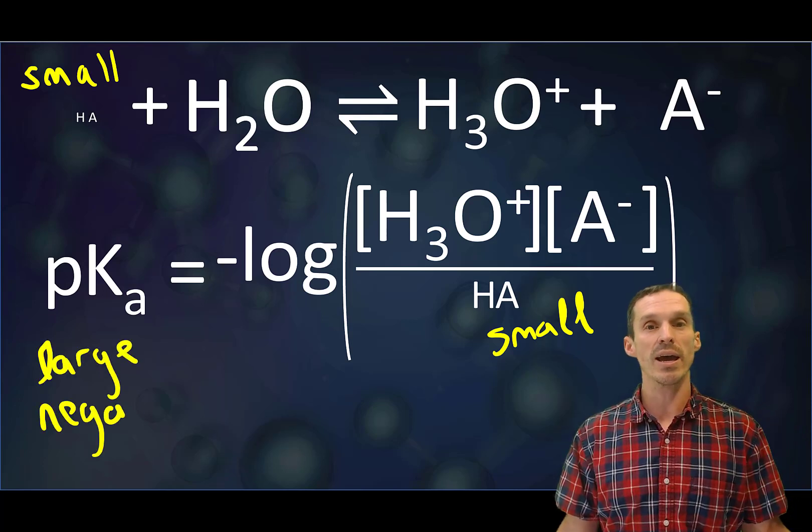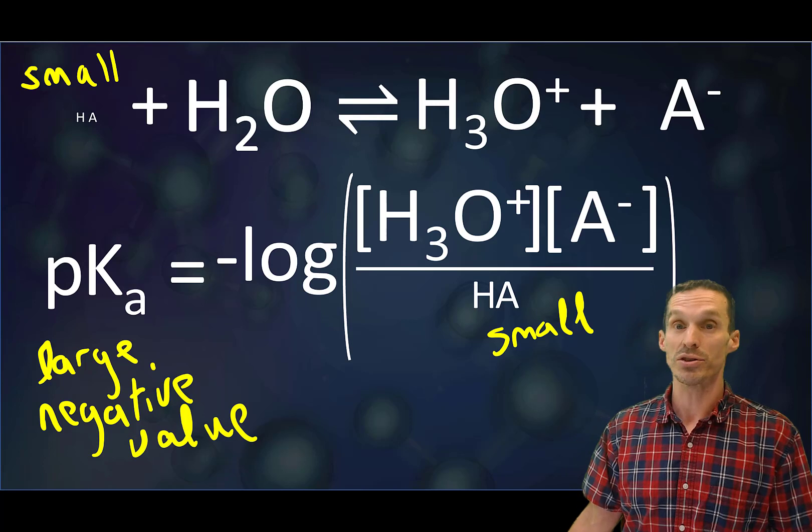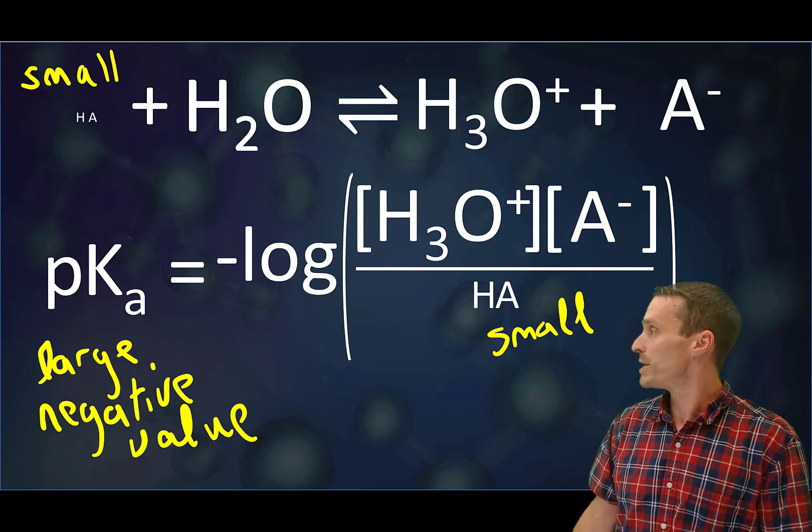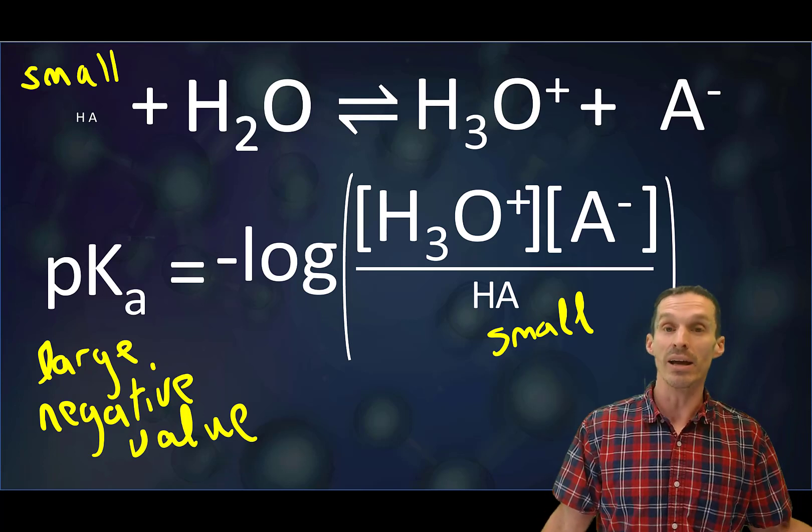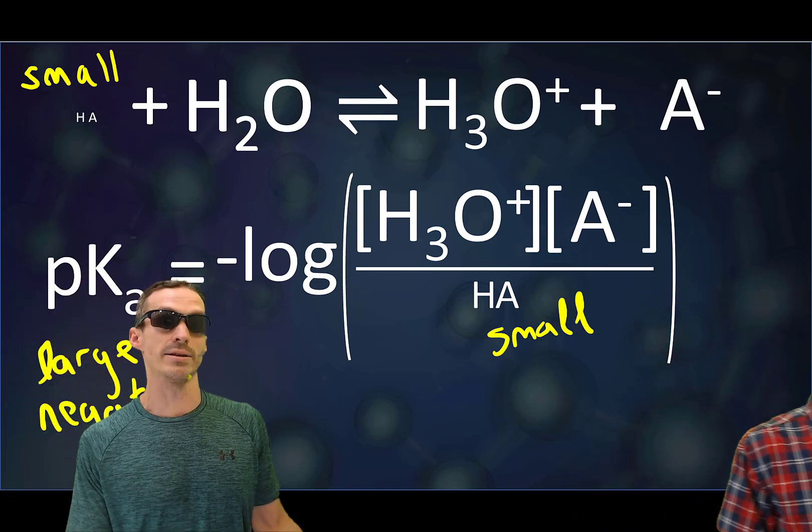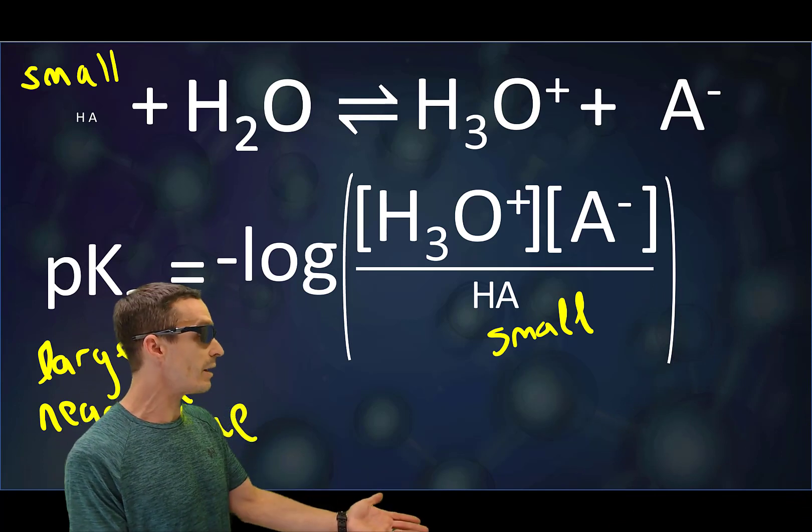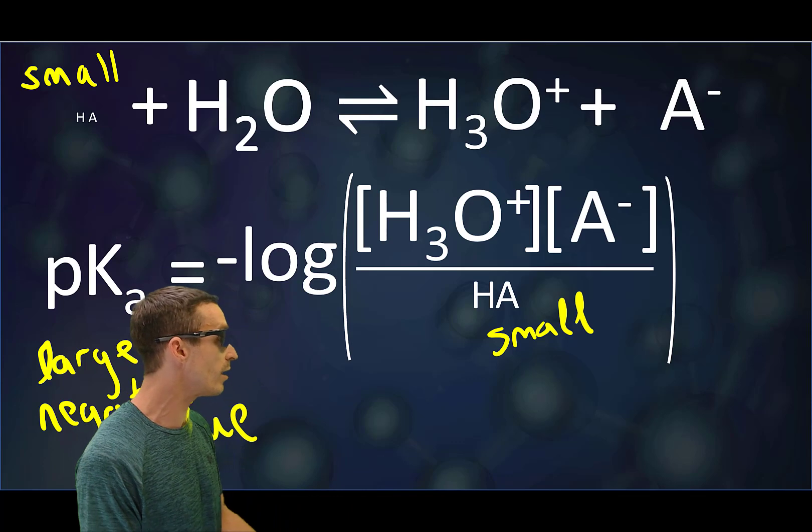Once again, if the HA concentration is small, or in other words if most of it is dissociated, then the pKa will tend towards zero. Or in the extreme cases, like for a strong acid, the pKa can actually go on to the negative side. So pKa is useful for weak acids, but for strong acids we're basically, you agree, we're going to say that they dissociate completely. Good enough.